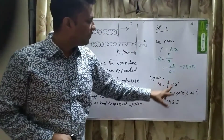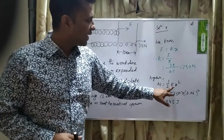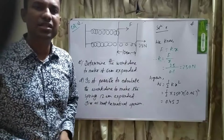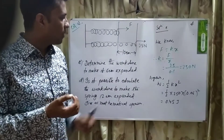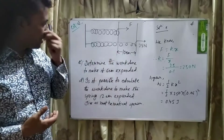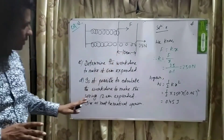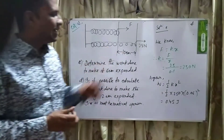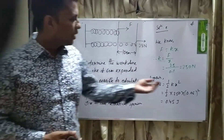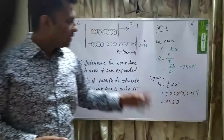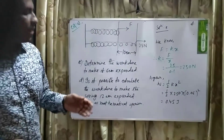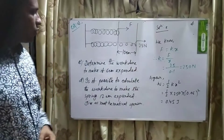Now putting K equals 250 N/m into the work done equation, and X equals 6 cm. Dividing 6 cm by 100 gives 0.06 meters. So W equals half times 250 times 0.06 squared, and the result is 0.45 Joules. This is the answer.